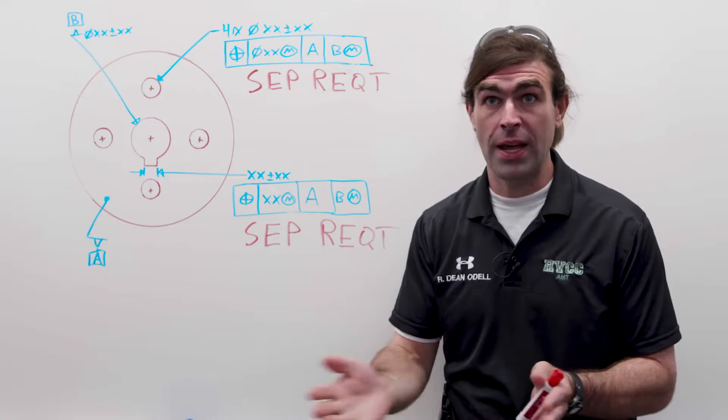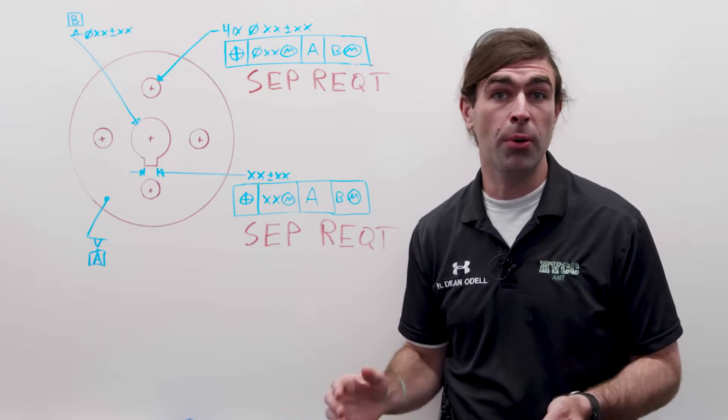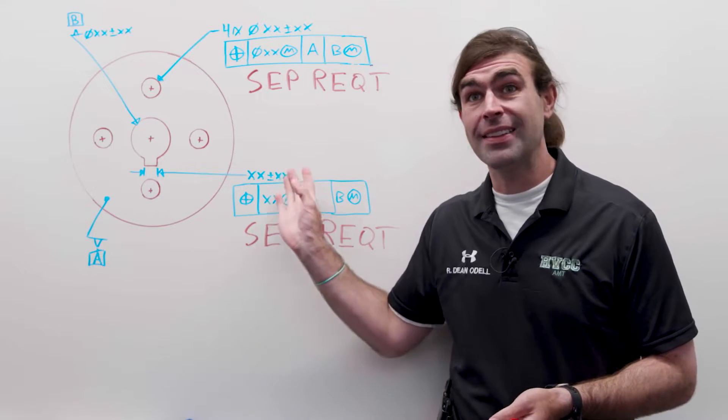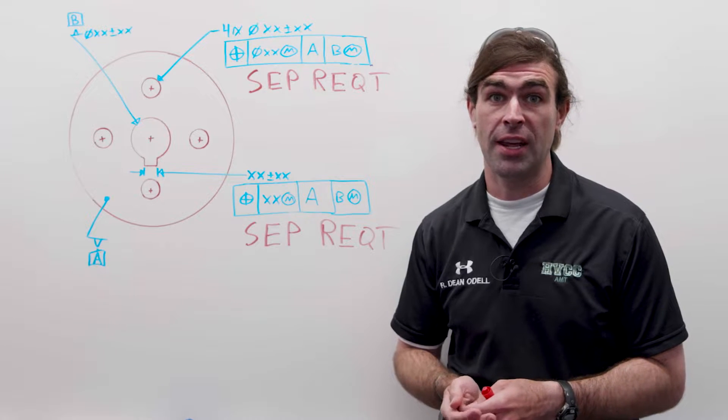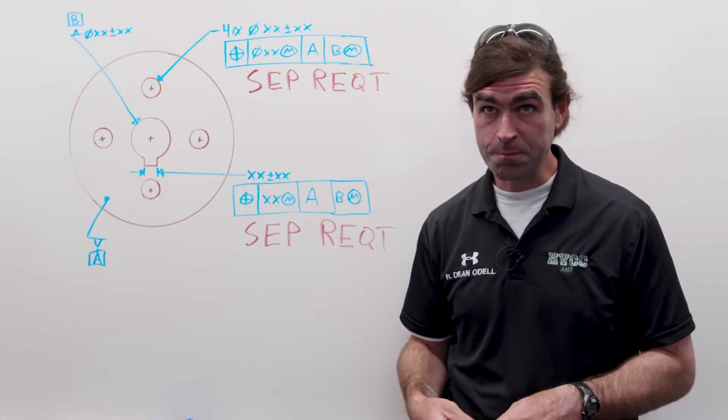I would argue that you should probably just write the whole thing out to make it more readable, so spell out separate requirement, but this is the example that's in the ASME standard, so people should recognize it just as well.